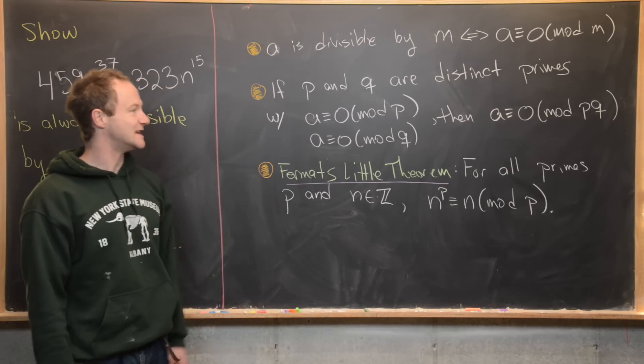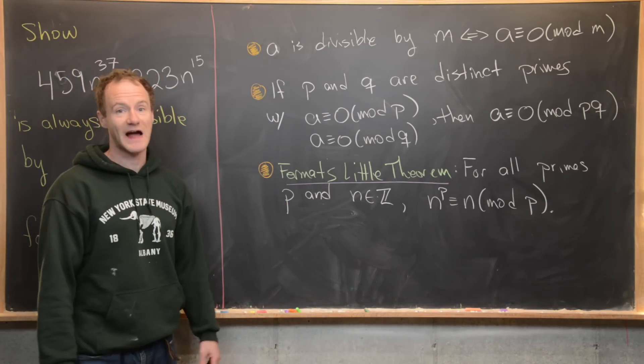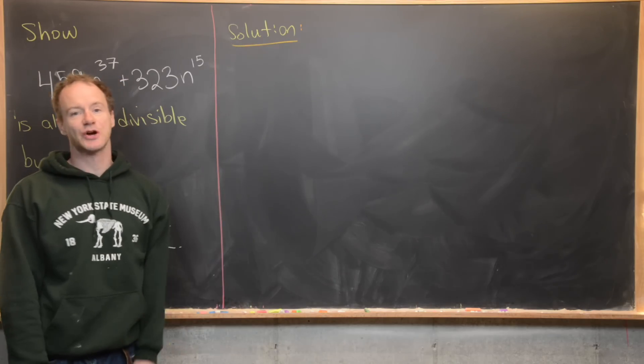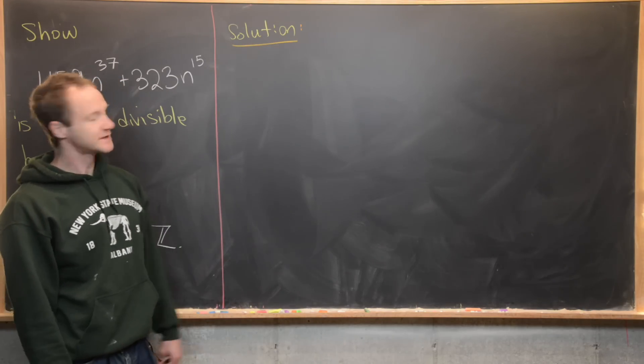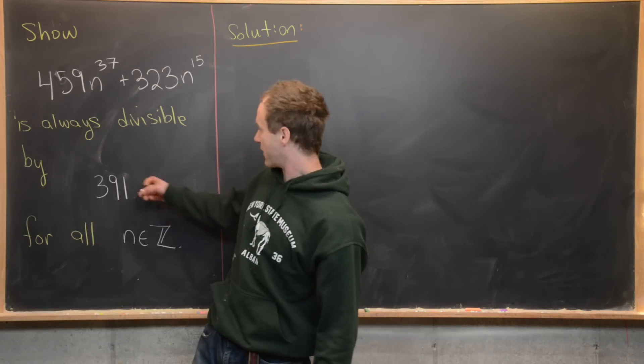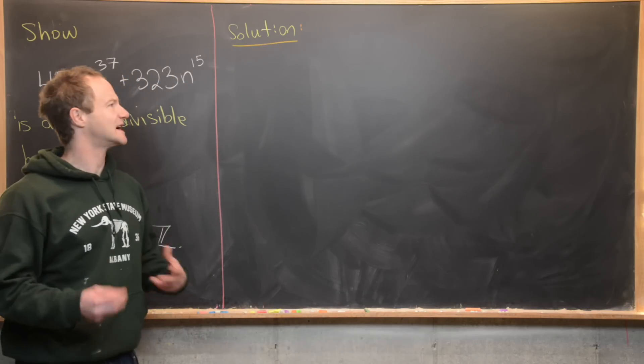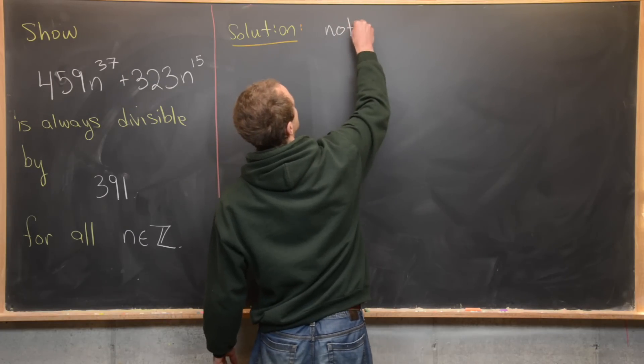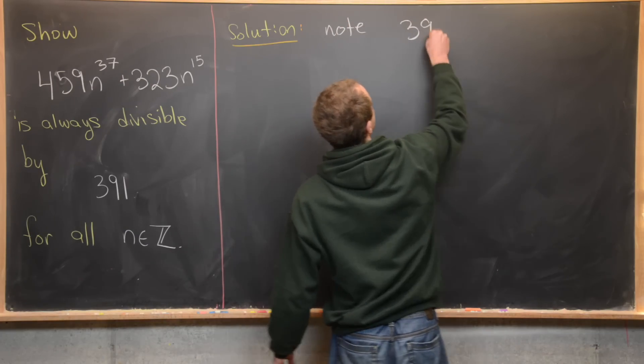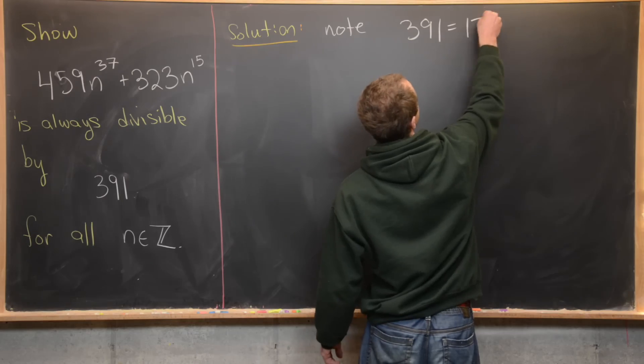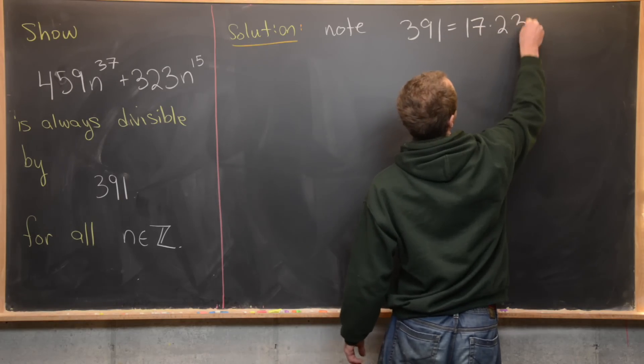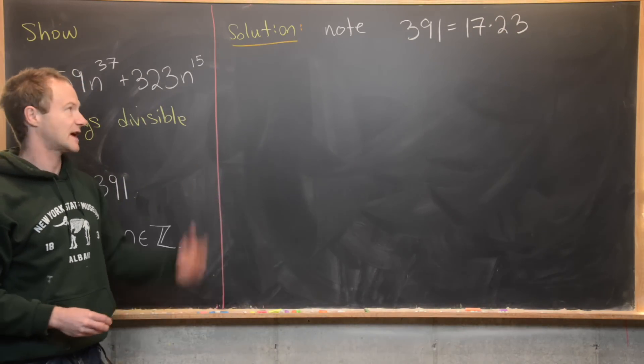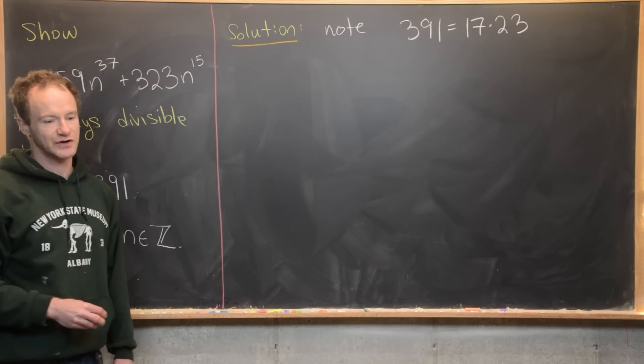Now that we've got these three useful facts, let's look at the solution. The first thing that I want to notice is that 391 has a nice factorization into primes. Note 391 is the same thing as 17 times 23. And 17 and 23 are both primes, so that's the prime factorization of 391.